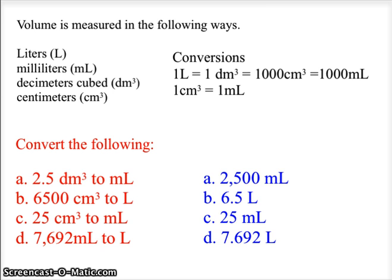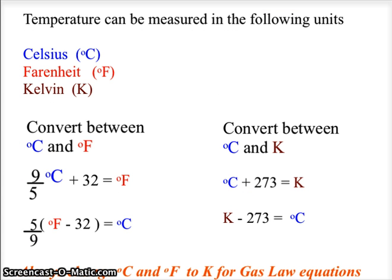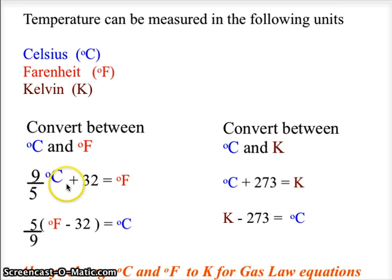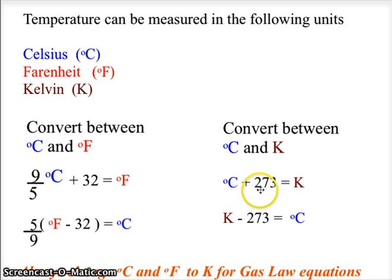Let's move on to temperature. As a reminder, in science we use Celsius, not Fahrenheit, and for the gas laws we always convert Celsius to Kelvin — we will always work in Kelvin for the gas laws. The conversion equations are: Fahrenheit equals nine-fifths times Celsius plus 32; Celsius equals (Fahrenheit minus 32) times five-ninths; Kelvin equals Celsius plus 273; and Celsius equals Kelvin minus 273.